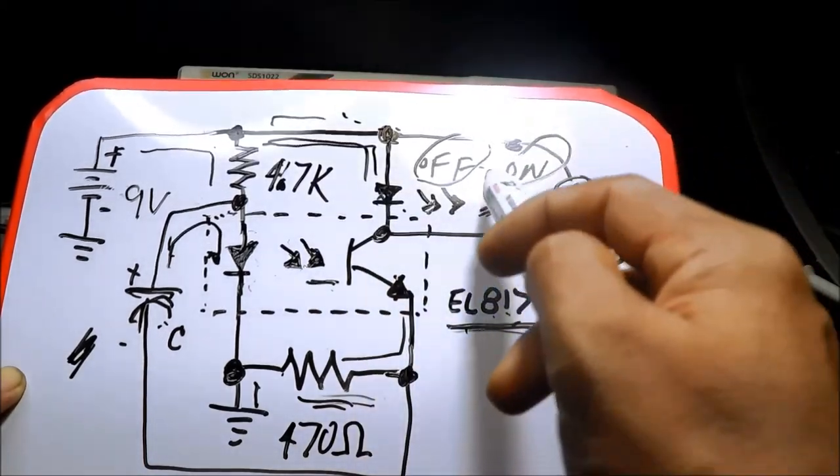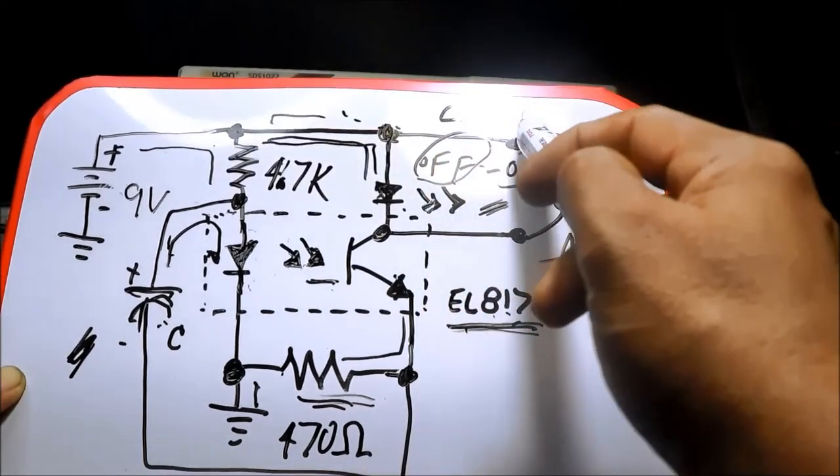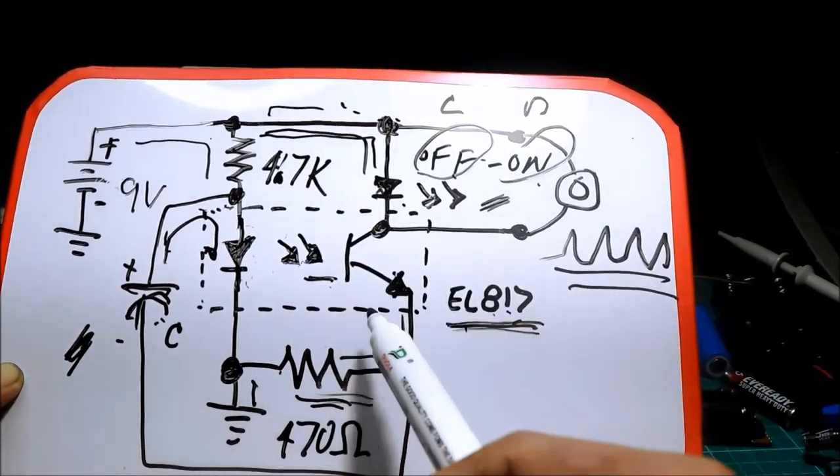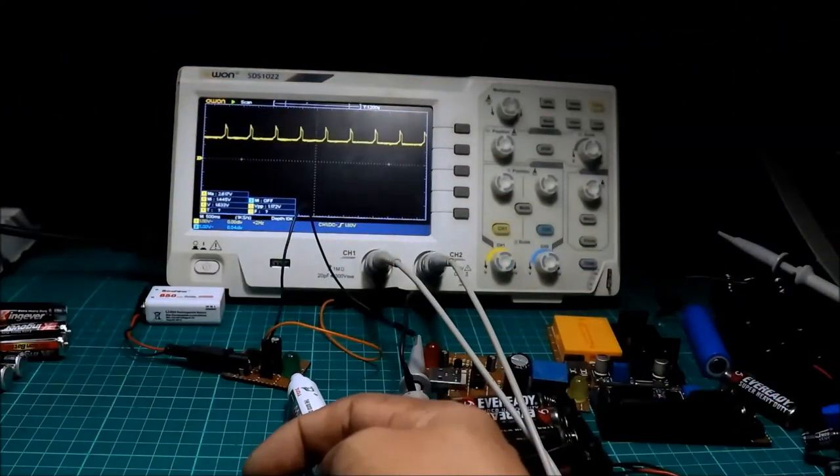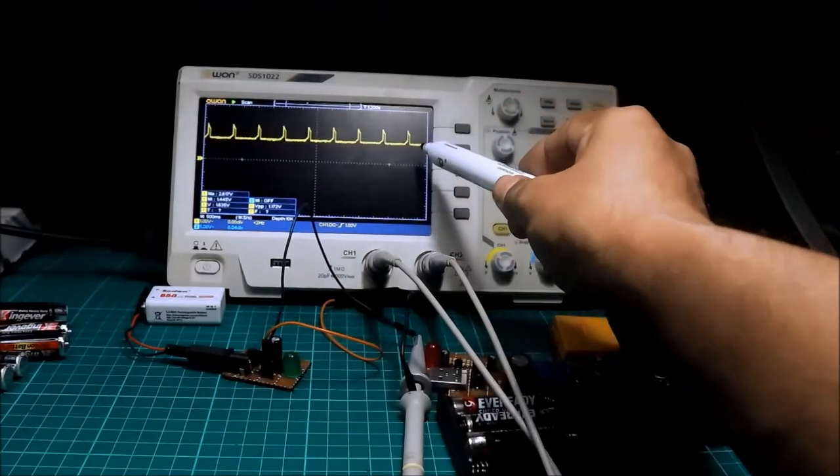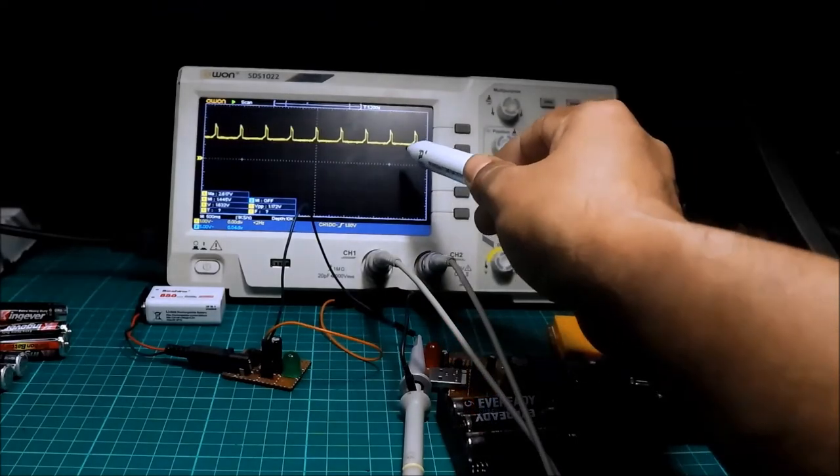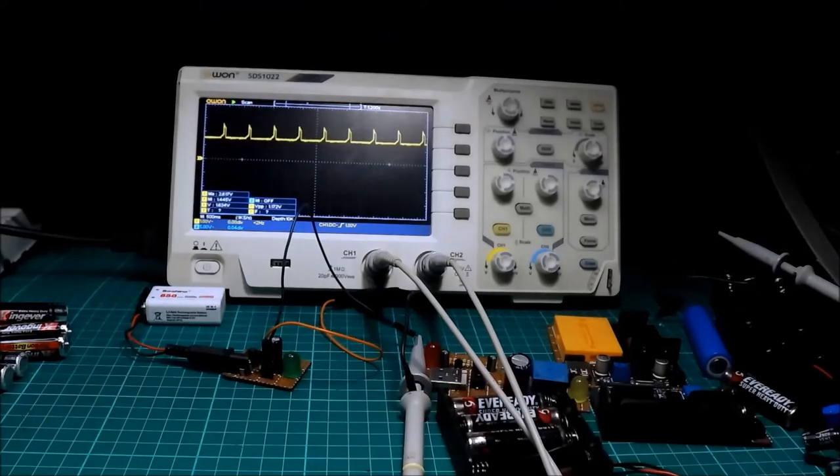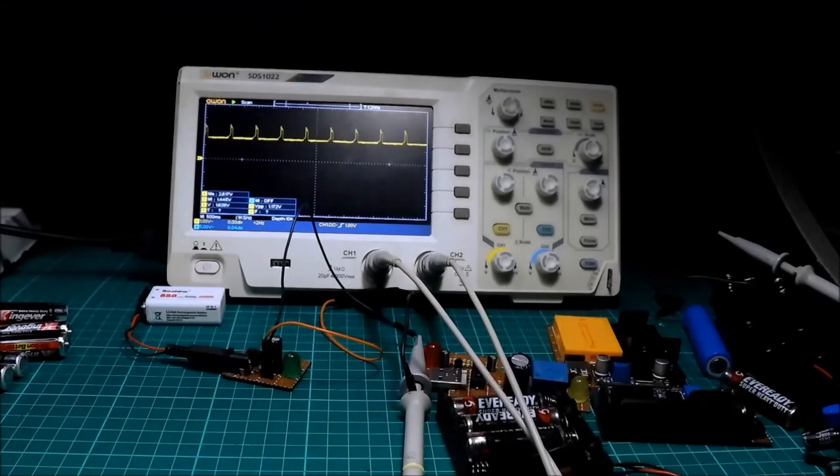On. Off. On. Charge. Discharge. So, yan ang dahilan kung bakit meron tayong LED flasher na optocoupler na merong waveform niya. On, off, on, off. Pulsating. Siya ay oscillator. Okay? Thank you.